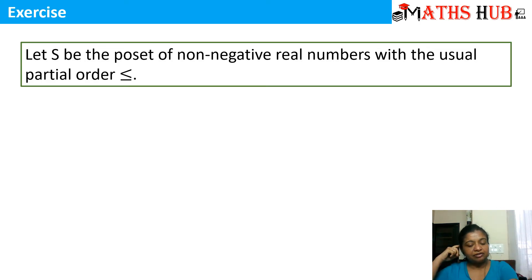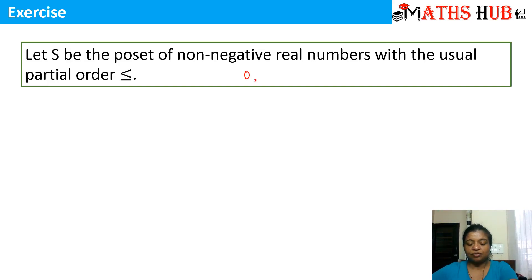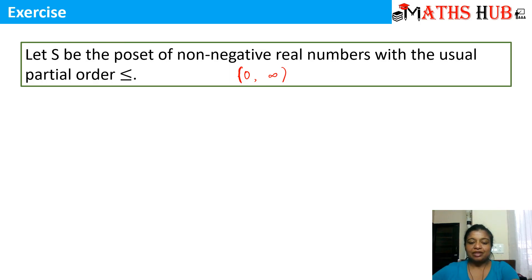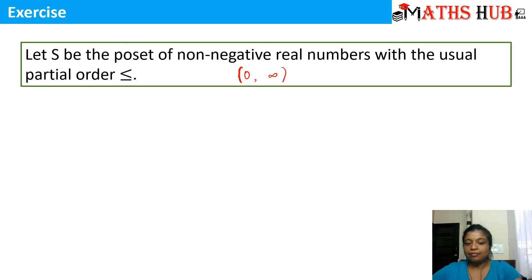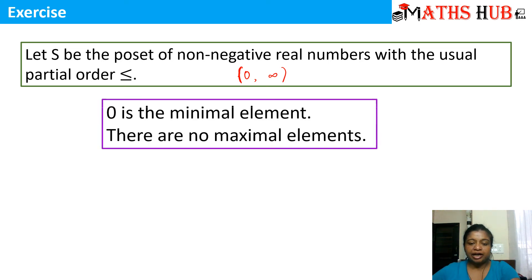Consider the poset of non-negative real numbers with the usual partial order less than or equal to. Non-negative real numbers start from 0 going to infinity. In this case, 0 is the minimal element since everything starts from 0. Since for any number you choose you can always find a higher number, there are no maximal elements. So in the set of non-negative real numbers, 0 is the minimal element and there are no maximal elements.